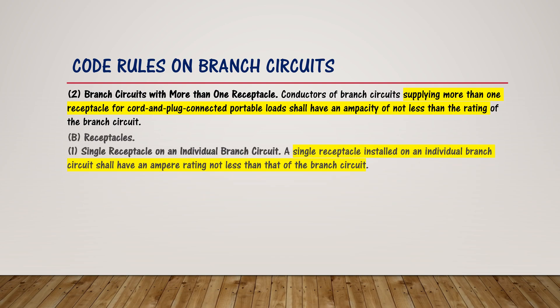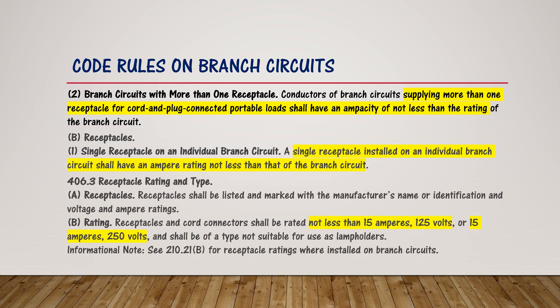For a single receptacle on an individual branch circuit, a single receptacle shall have an ampere rating not less than that of the branch circuit. We must ensure the rating of the receptacle is not less than the circuit breaker or protection device. Under Section 406.3, 'Receptacle Rating and Type,' receptacles and cord connectors shall be rated 15 amperes 125 volts or 15 amperes 250 volts, though in industry there are also ratings slightly above 15 amperes.